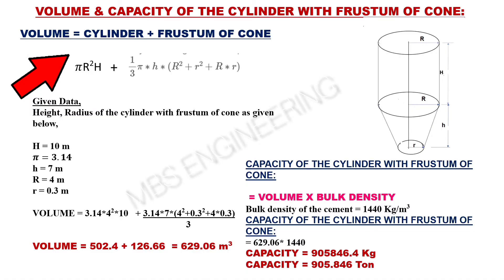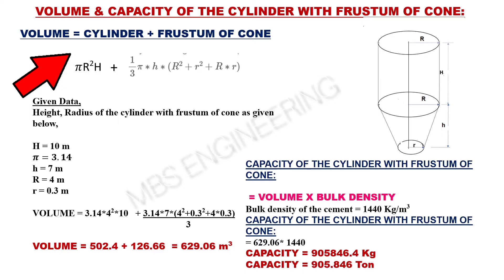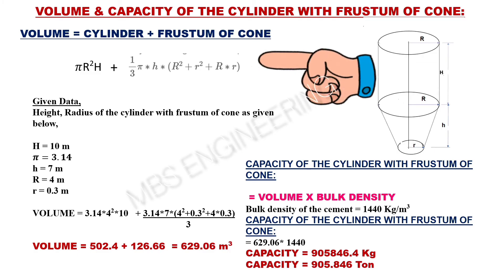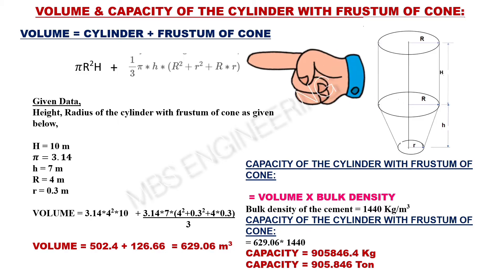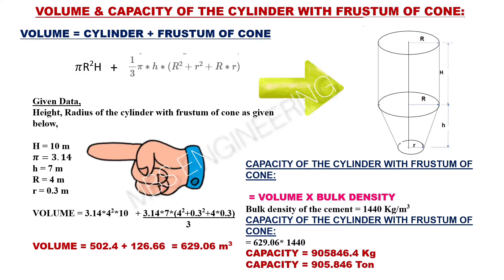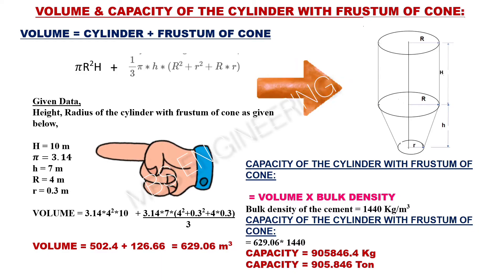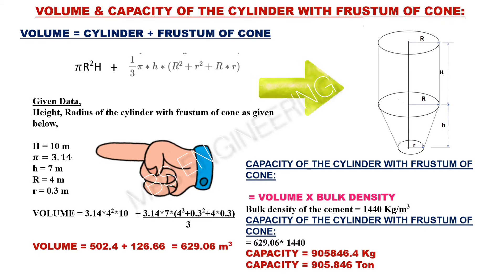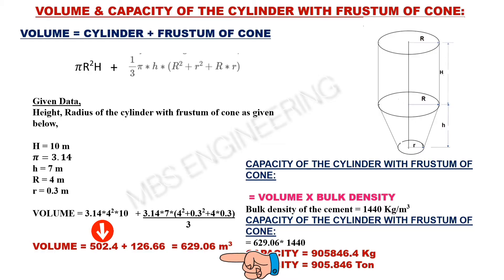Next, we learn about how to calculate the volume and capacity of the cylinder with frustum of cone. The volume calculation formula is: volume of the cylinder plus volume of the frustum of cone. Volume of cylinder is Pi r² h, plus volume of frustum of cone: Pi × h × (R² + r² + R×r) divided by 3. Please refer to the snaps and given data. Capital H is 10 meters, Pi is 3.14, small h is 7 meters, capital R is 4 meters, small r is 0.3 meters. The volume of the cylinder is 502.4 and the volume of the frustum of the cone is 126.66.